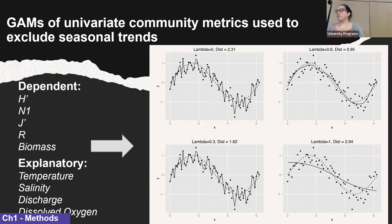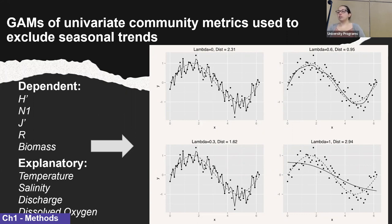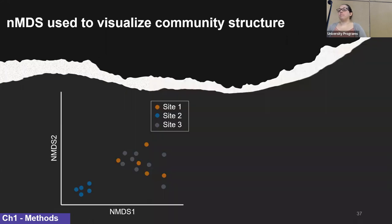I'm then going to use a smoothing parameter to examine the long-term trends and account for that seasonal variability. This figure on the right is an example of a smoothing parameter being used at different levels — the model is the solid line, not the dotted line. The models on the left include regular short-term variation, that waviness you see, whereas the figure on the top right captures the overall trend but excludes that short-term variation.